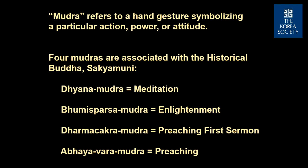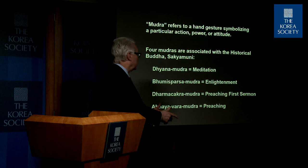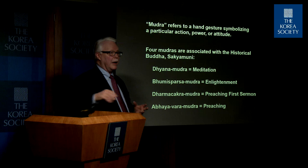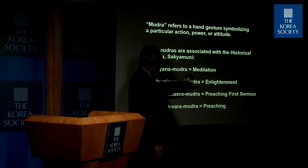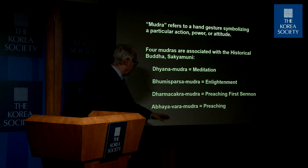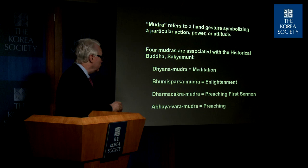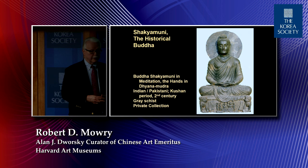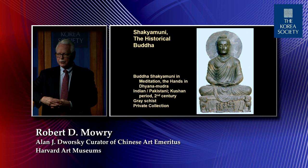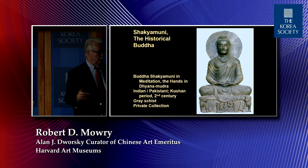All of the Buddhas — and there are many different Buddhas — are distinguished one from the other basically by the hand gestures, which are known as mudra. The mudra is a ritual hand gesture symbolizing a particular power, attitude, or action. Each Buddha has different mudras; some have several different mudras. Shakyamuni, the historical Buddha who lived in the 6th and 5th century BC, basically has a meditation mudra, an enlightenment mudra, the preaching of the first sermon, and another preaching mudra. The word 'Bodhi' means knowledge — Buddha derives from that word, meaning the enlightened one.